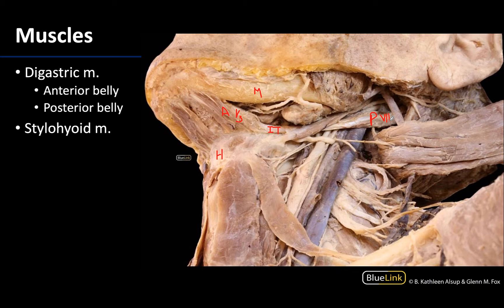Returning to the intermediate tendon region, you will get to really see the stylohyoid muscle, which is going to be right about here, extending into this region. The stylohyoid is actually going to divide around the intermediate tendon, and for the majority of its course it will run medial and parallel to the posterior belly of the digastric. With them being so close in location, it makes sense that this muscle is going to have a similar innervation to the posterior belly, cranial nerve 7.